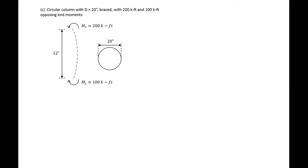Our next example is a circular column with a diameter of 20 inches. It's braced on both ends with 200 kip-foot and 100 kip-foot opposing end moments. Rotation is allowed at the ends, so it's pin-pinned, giving us k equal to 1.0. For a circular column, r equals 0.25 times d, so 0.25 times 20 inches equals 5 inches.